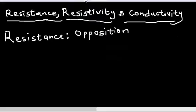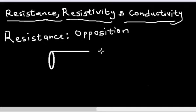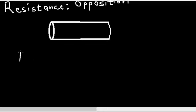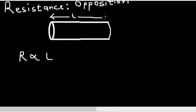To measure the resistance of a particular conductor, let's take a cylindrical conductor as an example. To measure its resistance, I need to know the length of the conductor. It is noted that the resistance of any material is directly proportional to its length — the longer the length, the more resistance you get — but inversely proportional to the cross-sectional area.